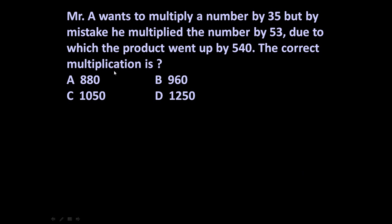Friends, here the given problem is Mr. A wants to multiply a number by 35, but by mistake he multiplied the number by 53, due to which the product went up by 540. The correct multiplication is 880, 960, 1050 or 1250.